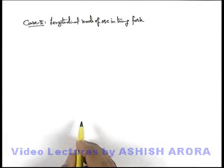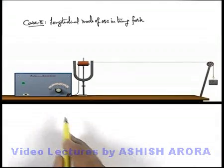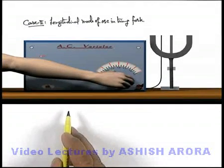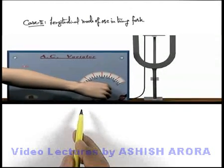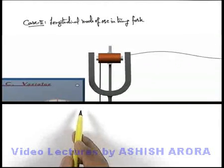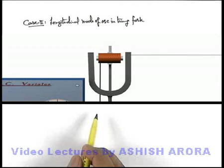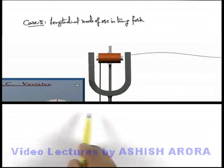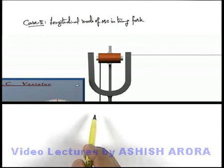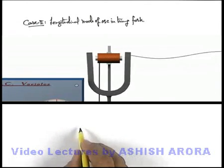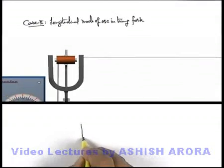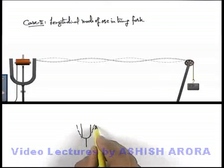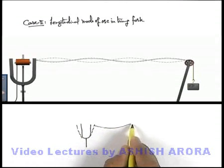Let's have a look at the situation here. You can see the tuning fork is kept in a vertical position, and when the source is switched on, the arms of the tuning fork vibrate along the length of the string, due to which the string gets slackened and then again it becomes tight. When the arms are going away from the main position, the string will be slackened in this situation.